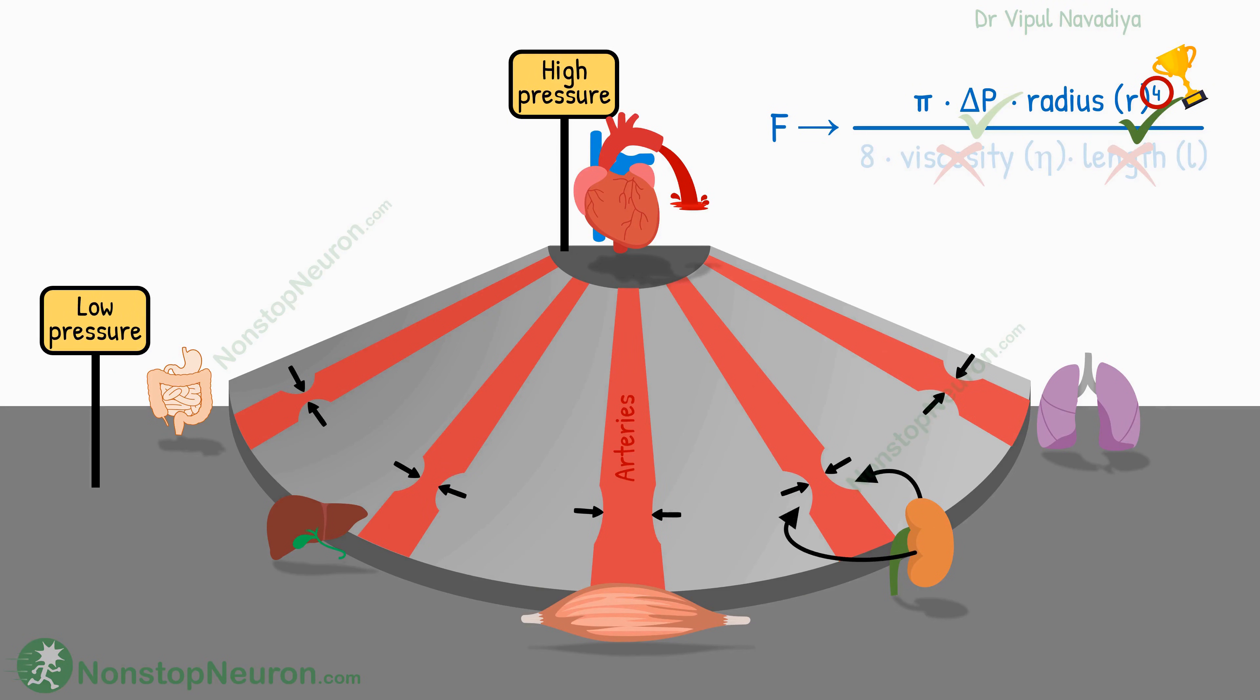In fact, some organs can regulate their own blood flow as needed by a mechanism called autoregulation. All thanks to the radius.